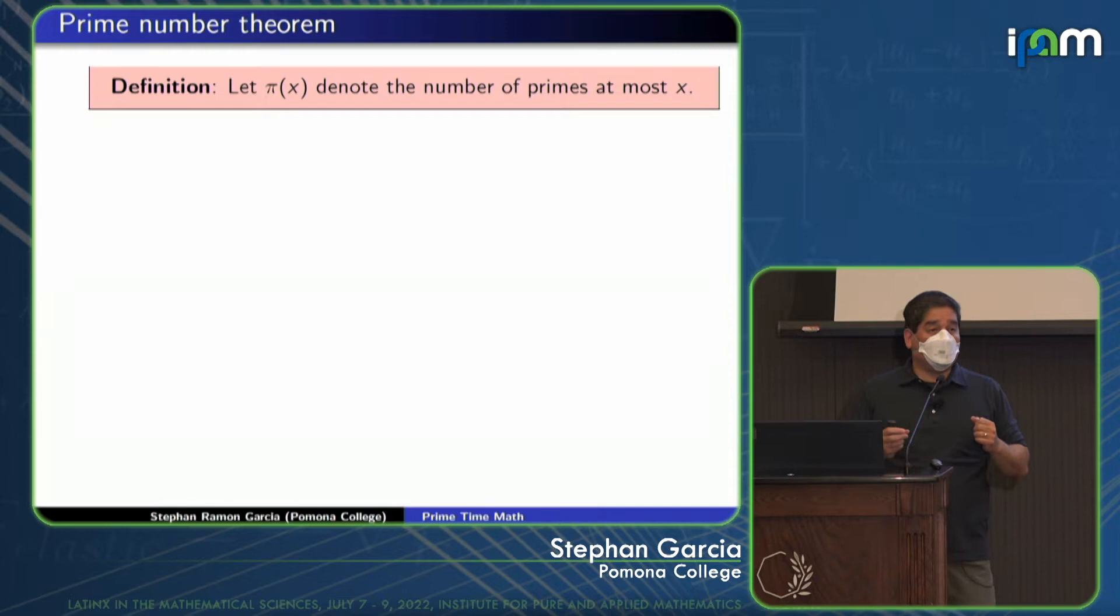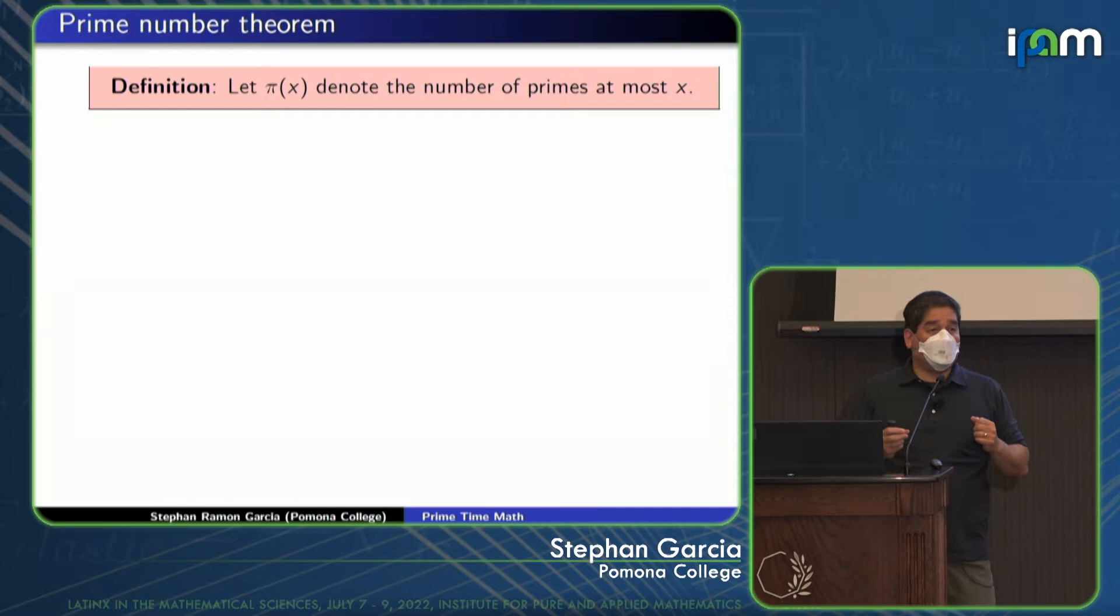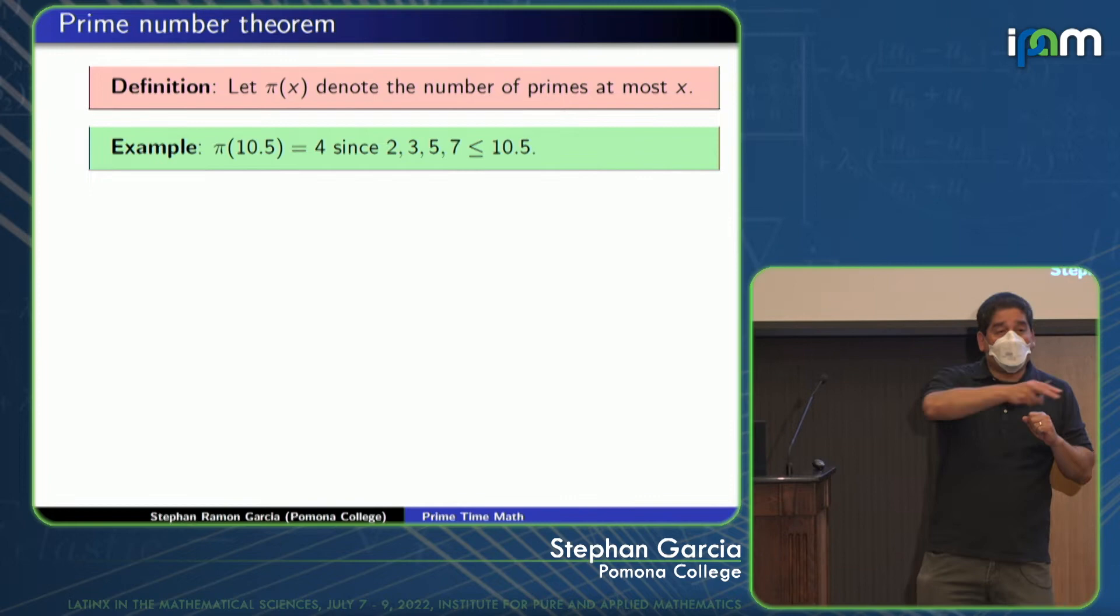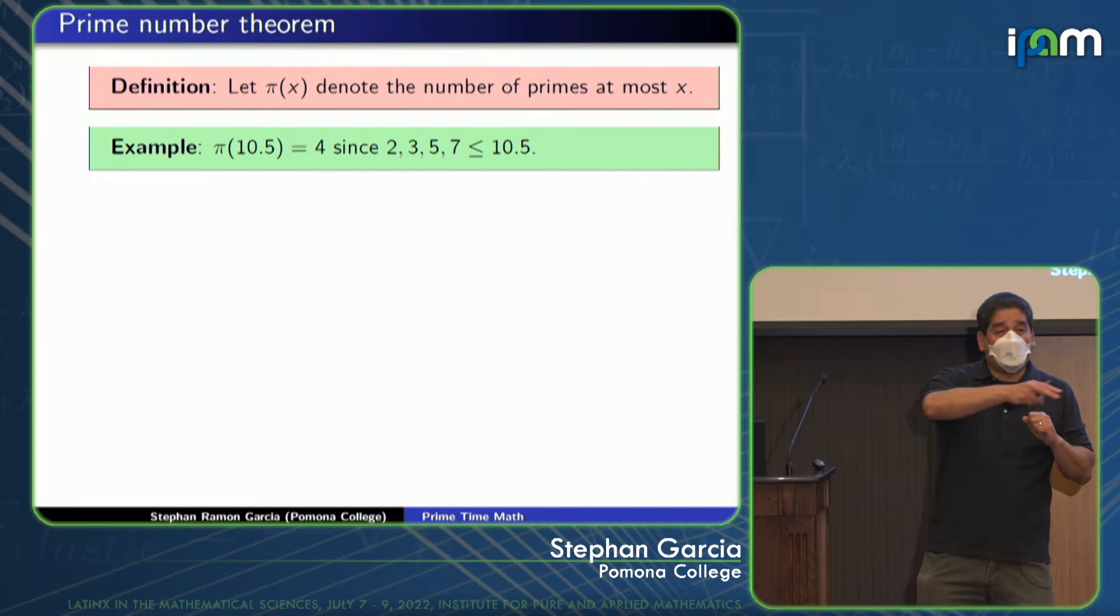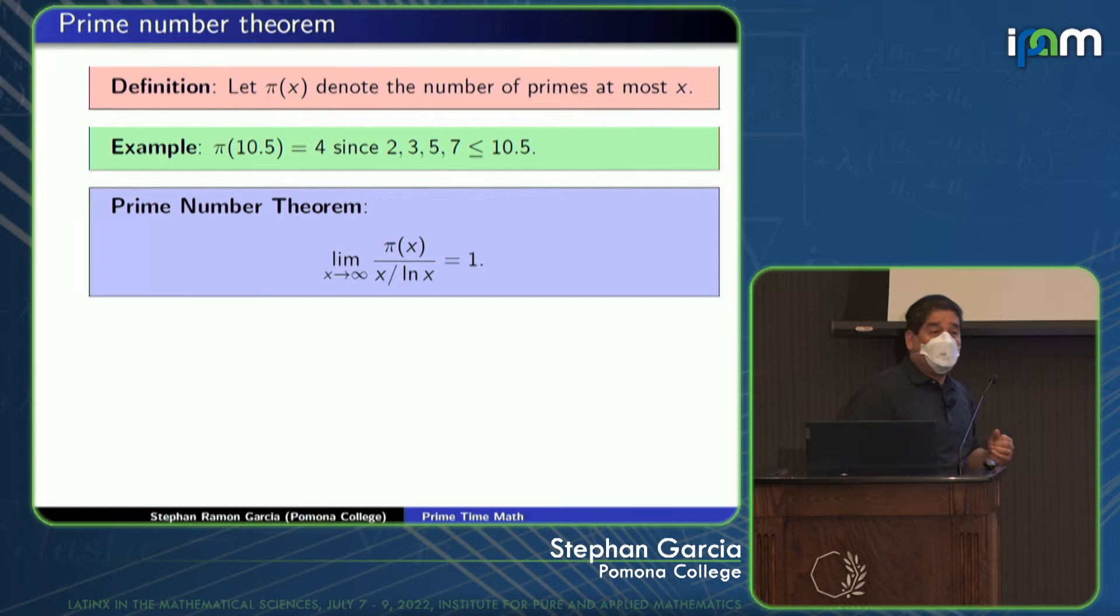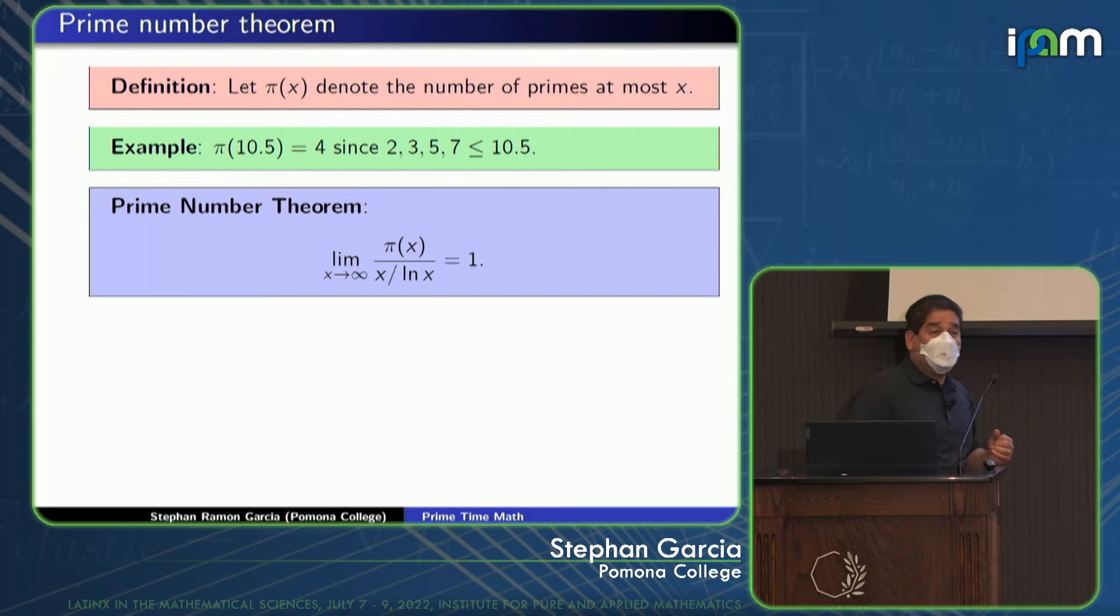The prime number theorem is what we're leading up to. Let π(x), π for p, denote the number of primes at most x. So you count the primes that are less than or equal to x. You keep a running tally of them. So for example, π(10.5) is 4 because you look at how many primes there are less than or equal to 10.5. Well, it's 2, 3, 5, and 7. So there's only 4 of them. So π(10.5) is 4. The prime number theorem, one of the greatest theorems in mathematics, one of the most stupendous achievements of human intellect is this theorem. And I want to tell you why this is a great theorem.